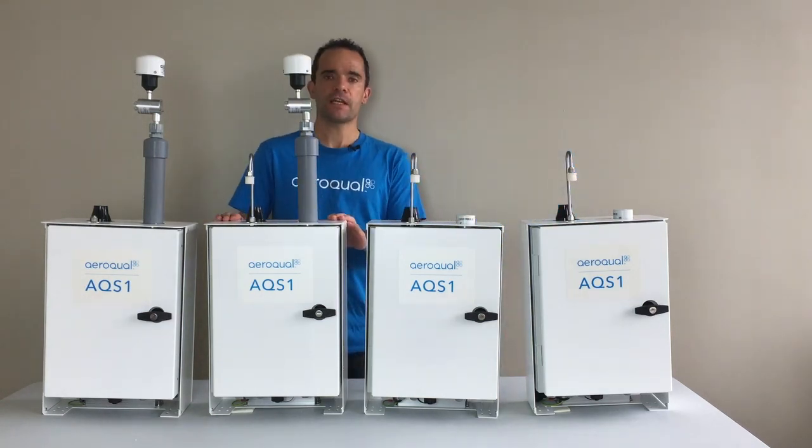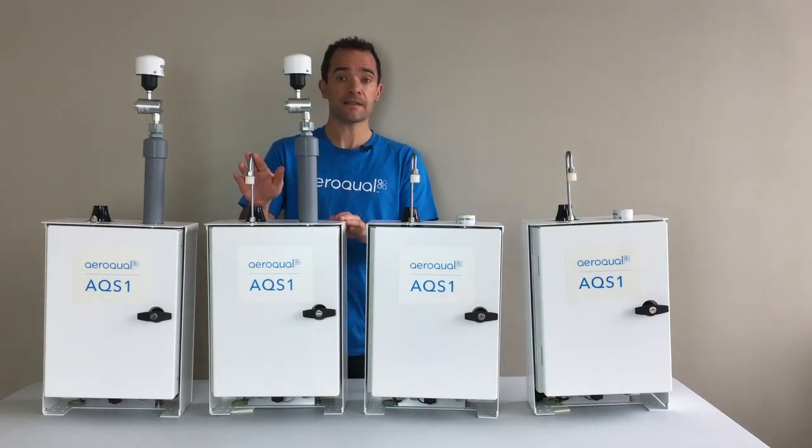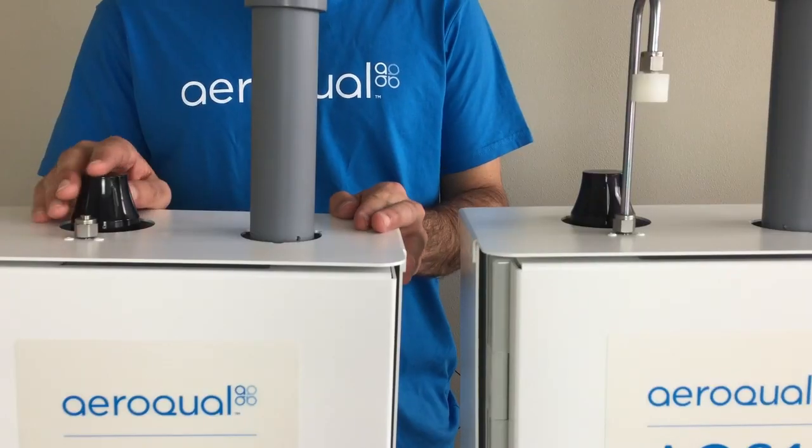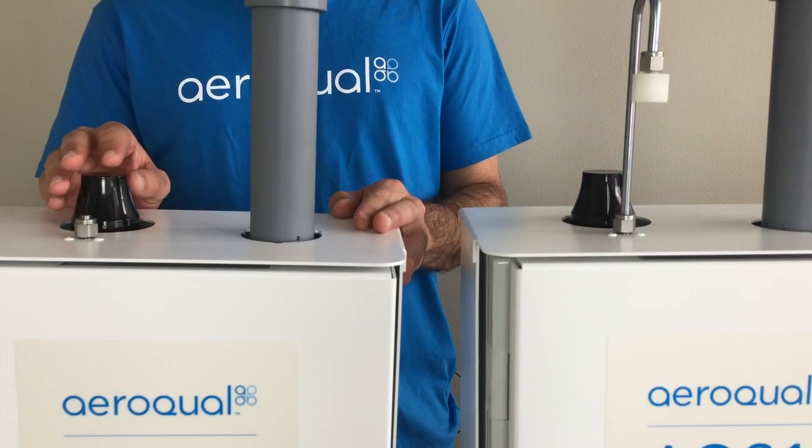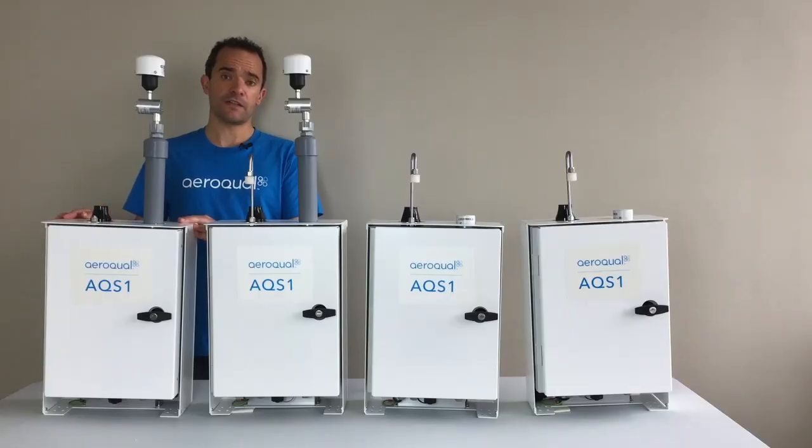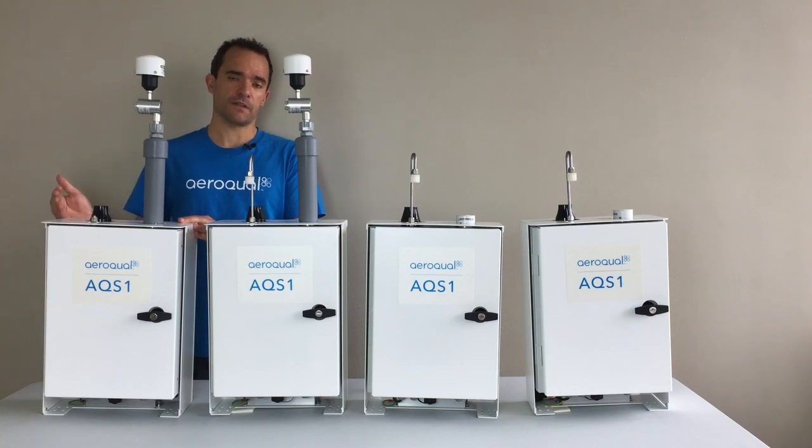This particular configuration here has the PM and the gas. And finally this particular configuration here has the PM only. So we're going to have a quick look inside and just see how some of the different configurations of the AQS1 look on the inside.